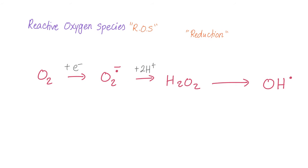Here we have the superoxide. We add two hydrogens — adding hydrogen is reduction. We end up with hydrogen peroxide, which can then form the hydroxyl free radical.